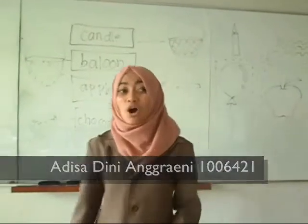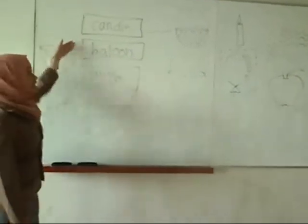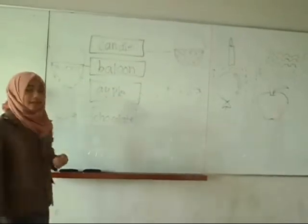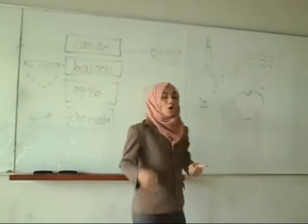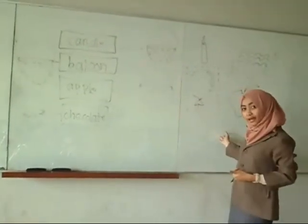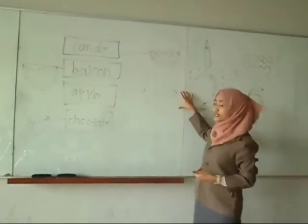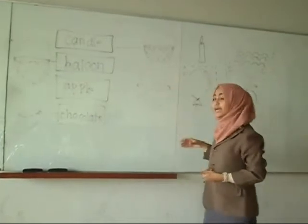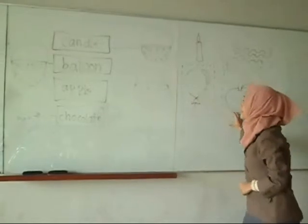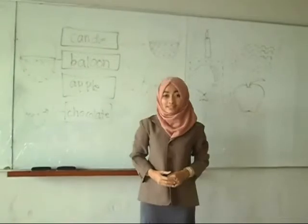Okay class, open your book on page two. Do you see the boxes and basket? Yes. What you have to do is look at page three, cut the pictures there, and paste them to the right basket. Cut the pictures on page three and paste them to the right basket. Okay, now let's start.